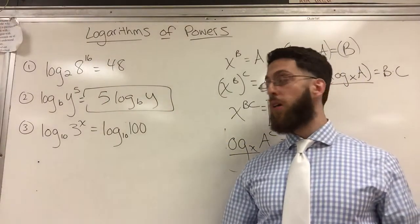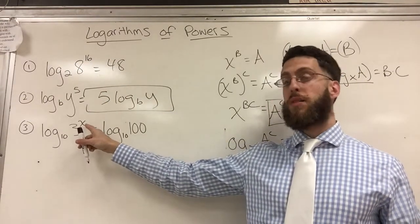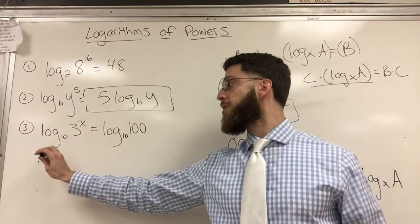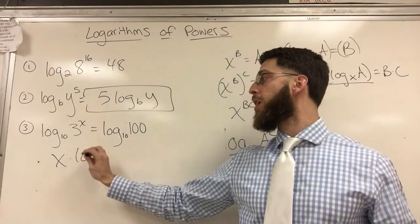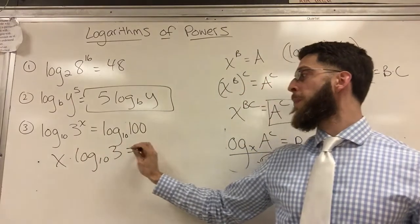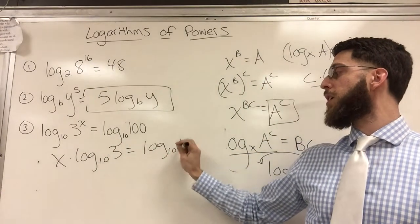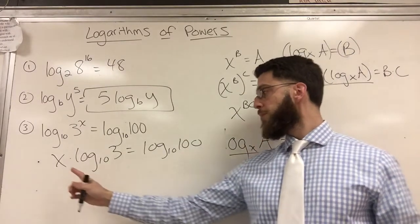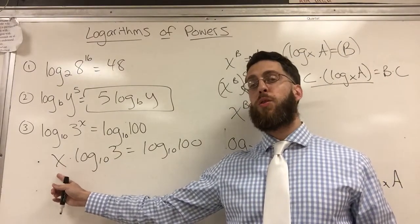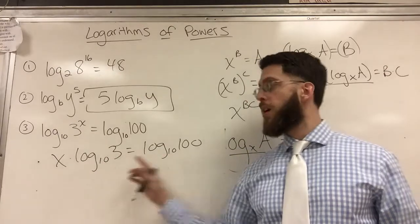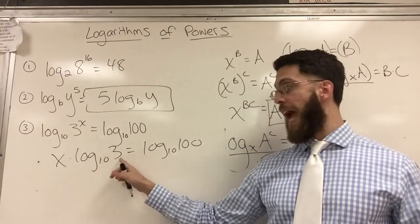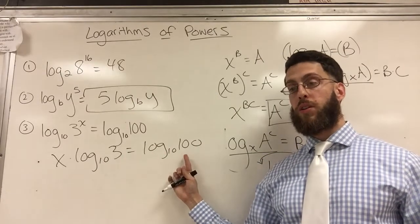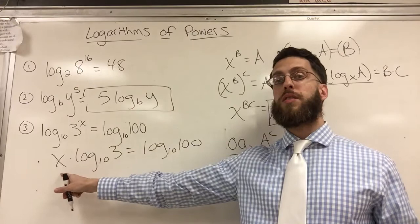Here, now I want to solve and I don't know that, but I can rewrite that. So I'm going to get x as the coefficient times log base 10 of 3 is equal to log base 10 of 100. So now if you want to get x alone, even though it looks crazy, this is not a variable.